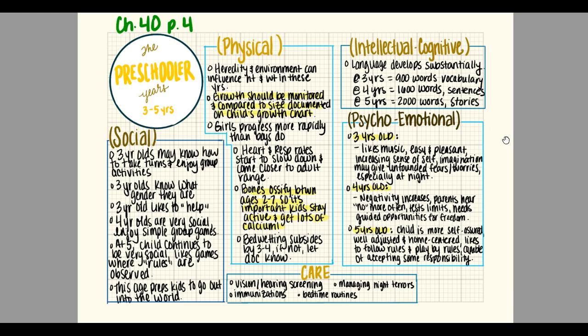For intellectual/cognitive development in preschoolers, language develops substantially. At about three years old a child has about 900 words in their vocabulary. By four years old they have 1,600 words and are able to develop complete sentences. At five years old they have about 2,000 words and are able to tell complete stories.